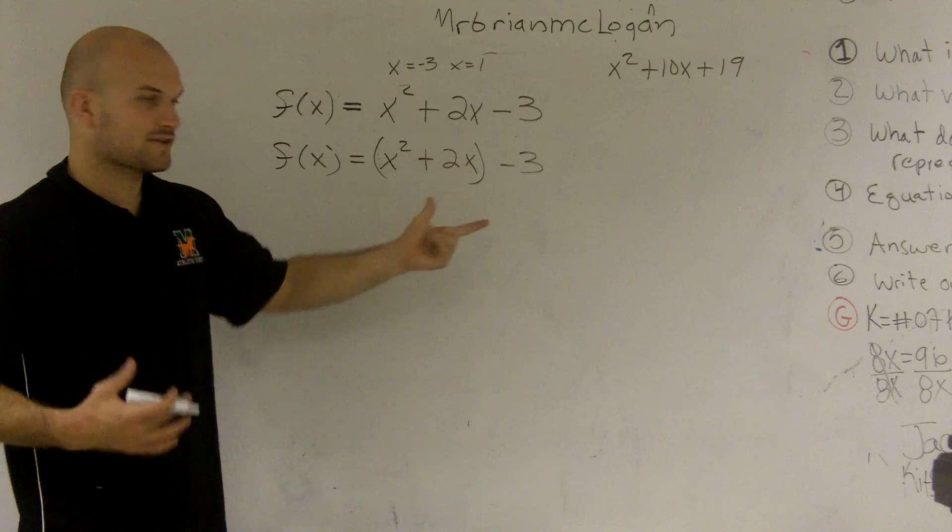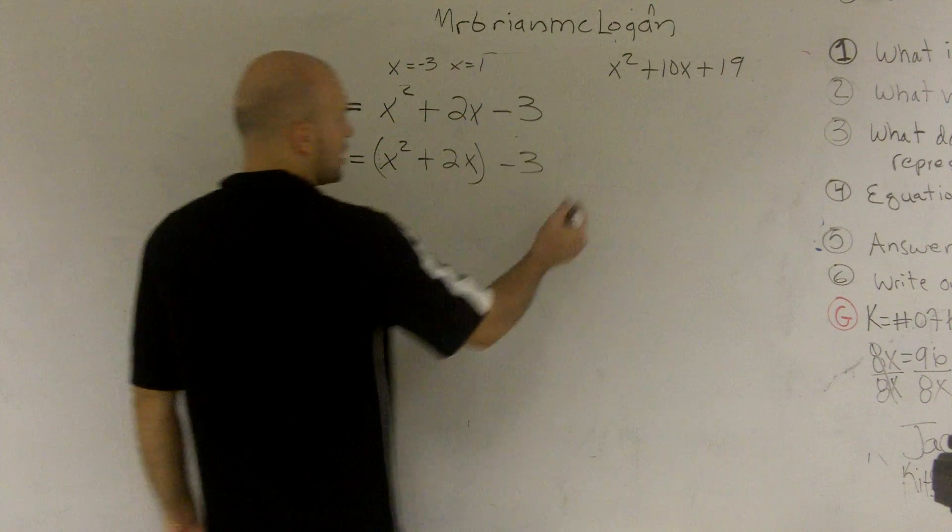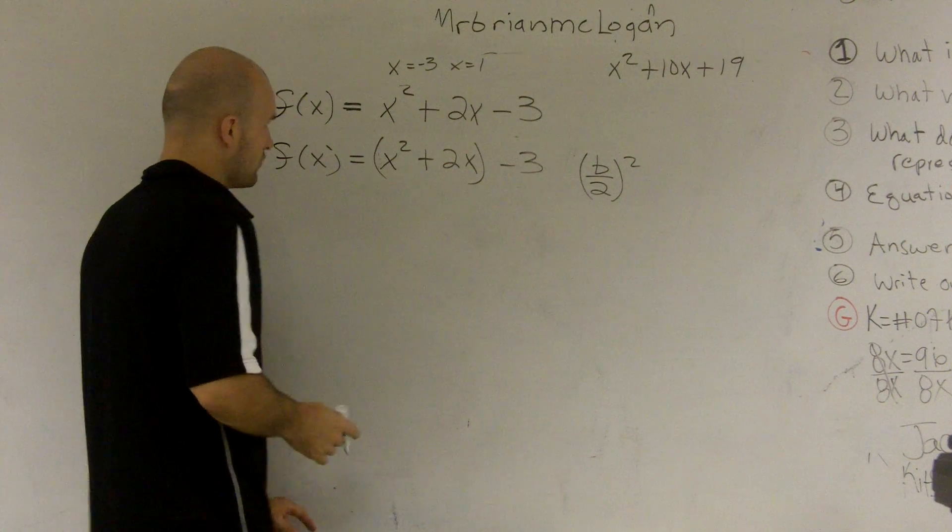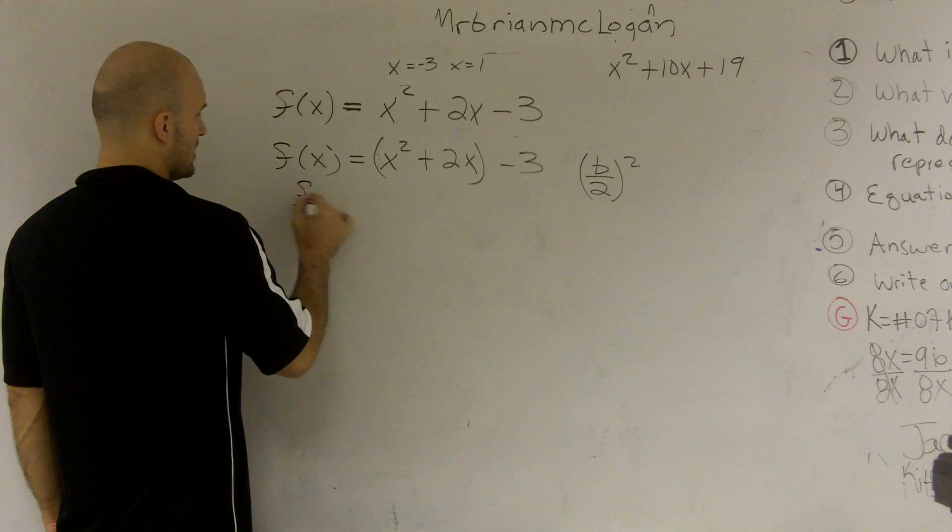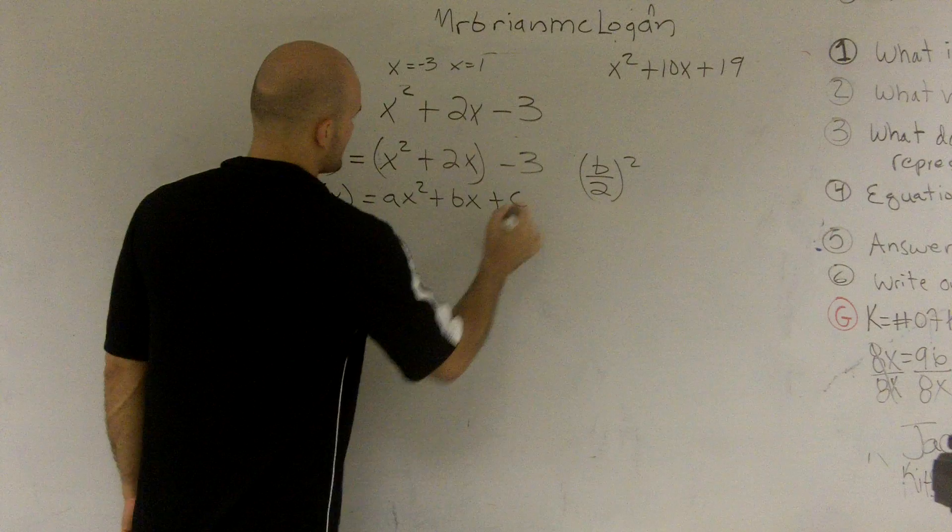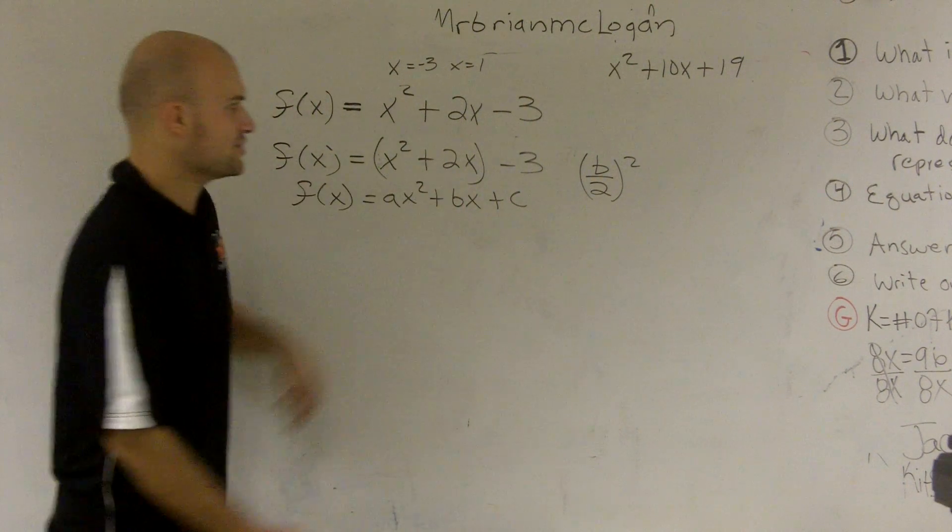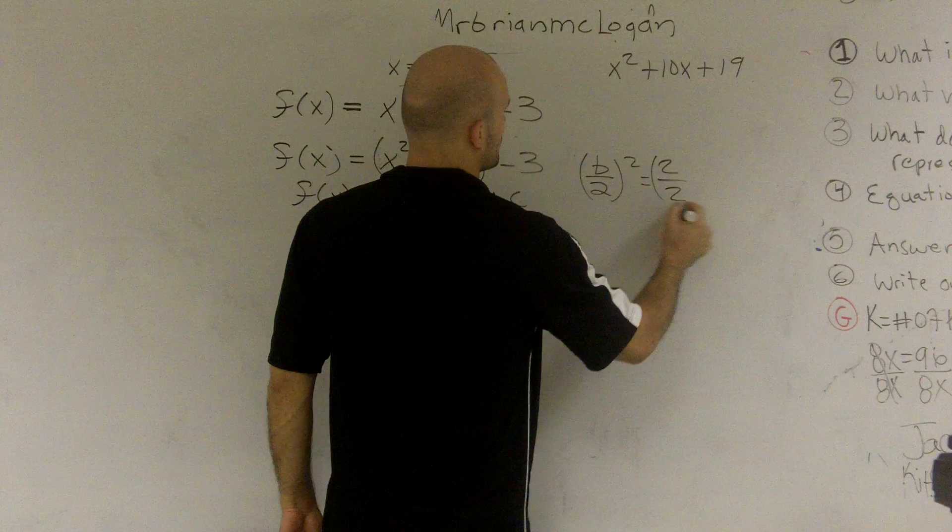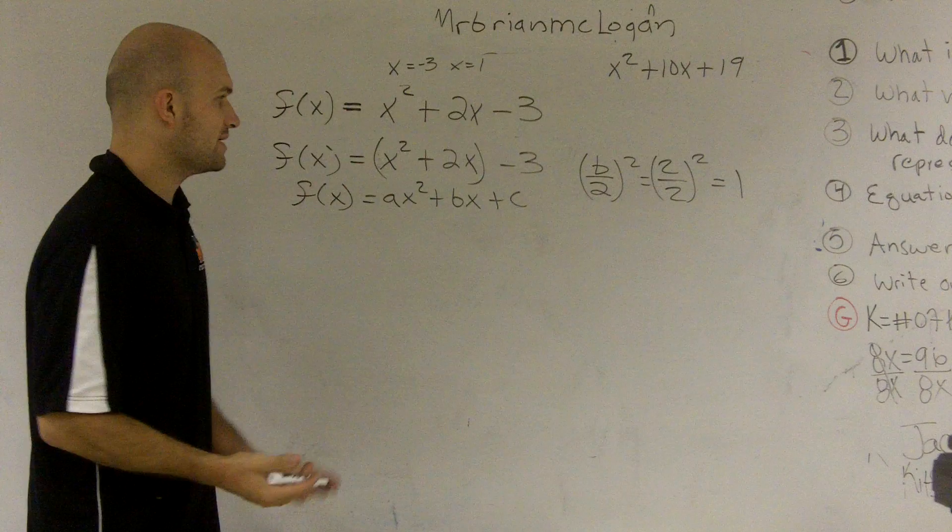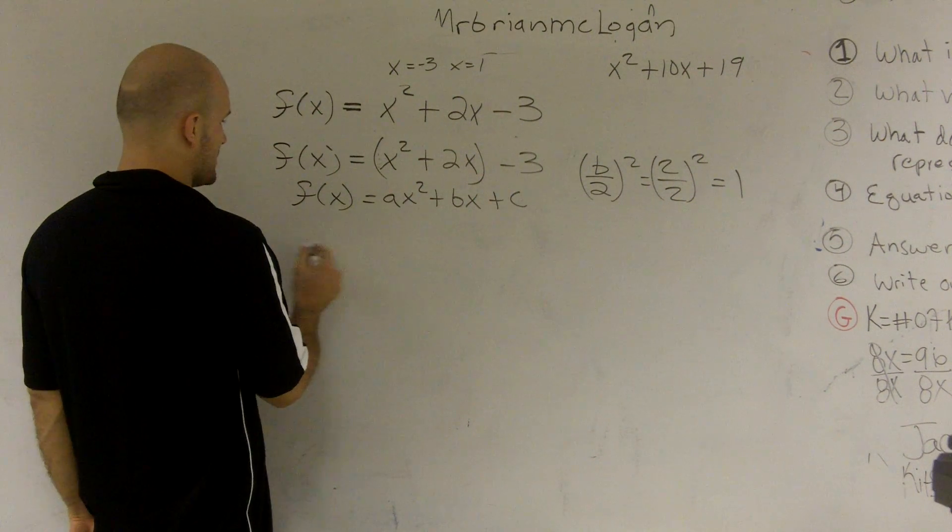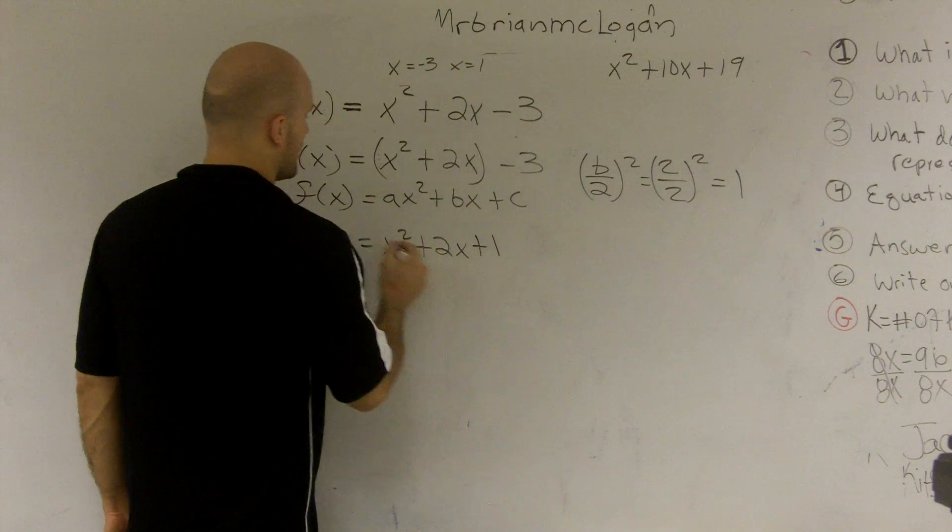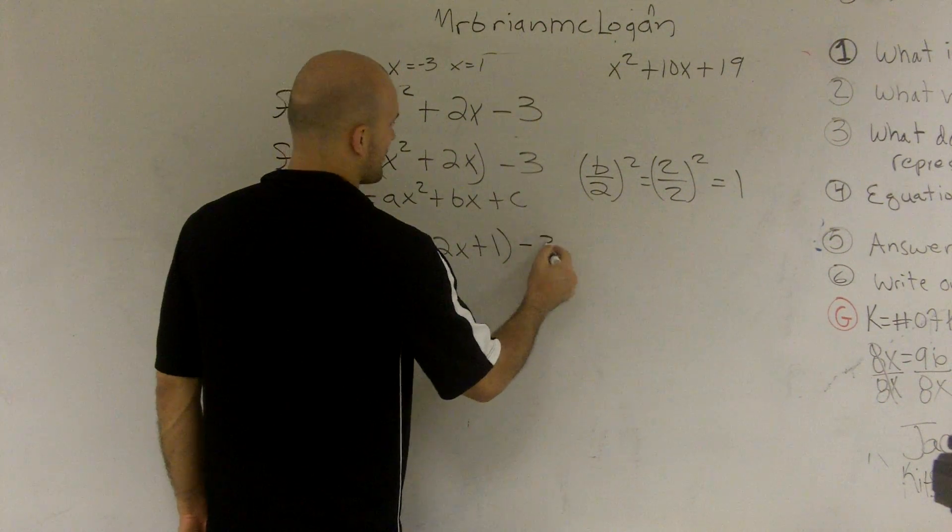So now, to get this to be a perfect square trinomial, what I'm going to have to do is what we call our b over 2 squared. And if you remember, a quadratic form is a x squared plus bx plus c. So my b in this equation is 2. So I have 2 over 2 squared. 2 divided by 2 is 1. 1 squared is equal to 1. So what I'm going to do is I'm going to add that 1 into my equation. So now I have f of x equals x squared plus 2x plus 1 minus 3.